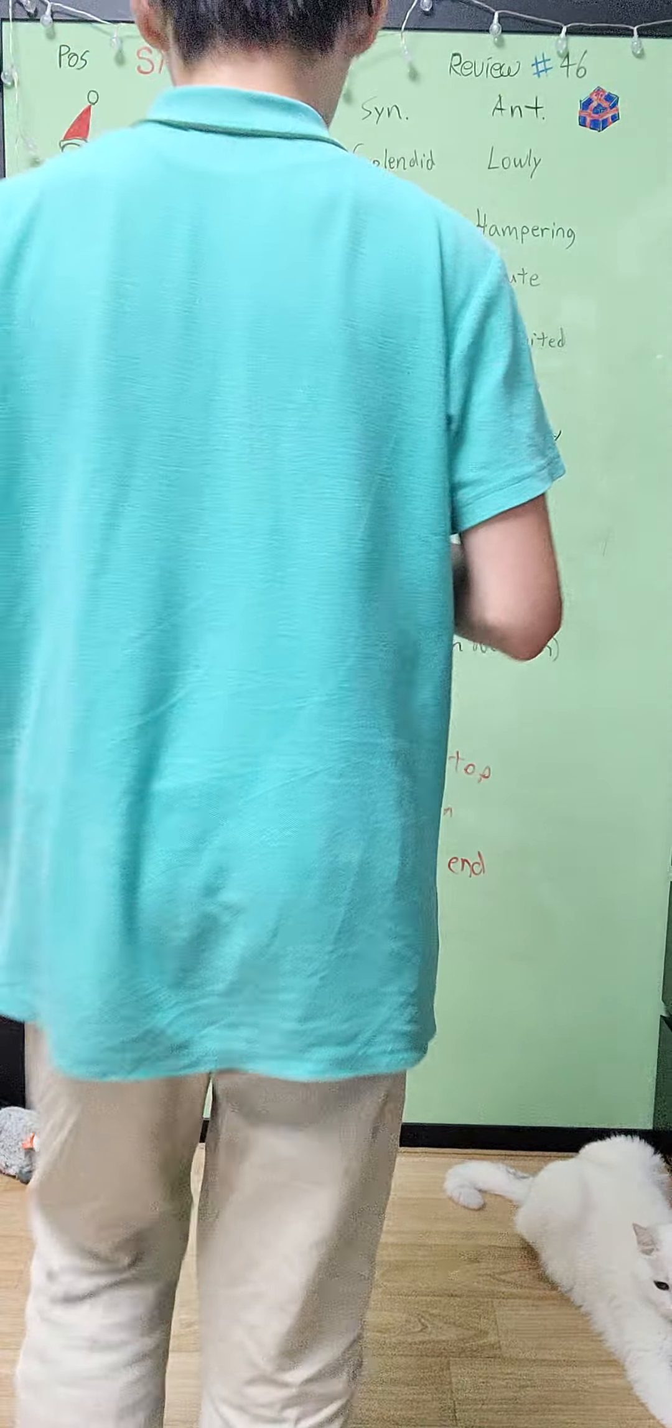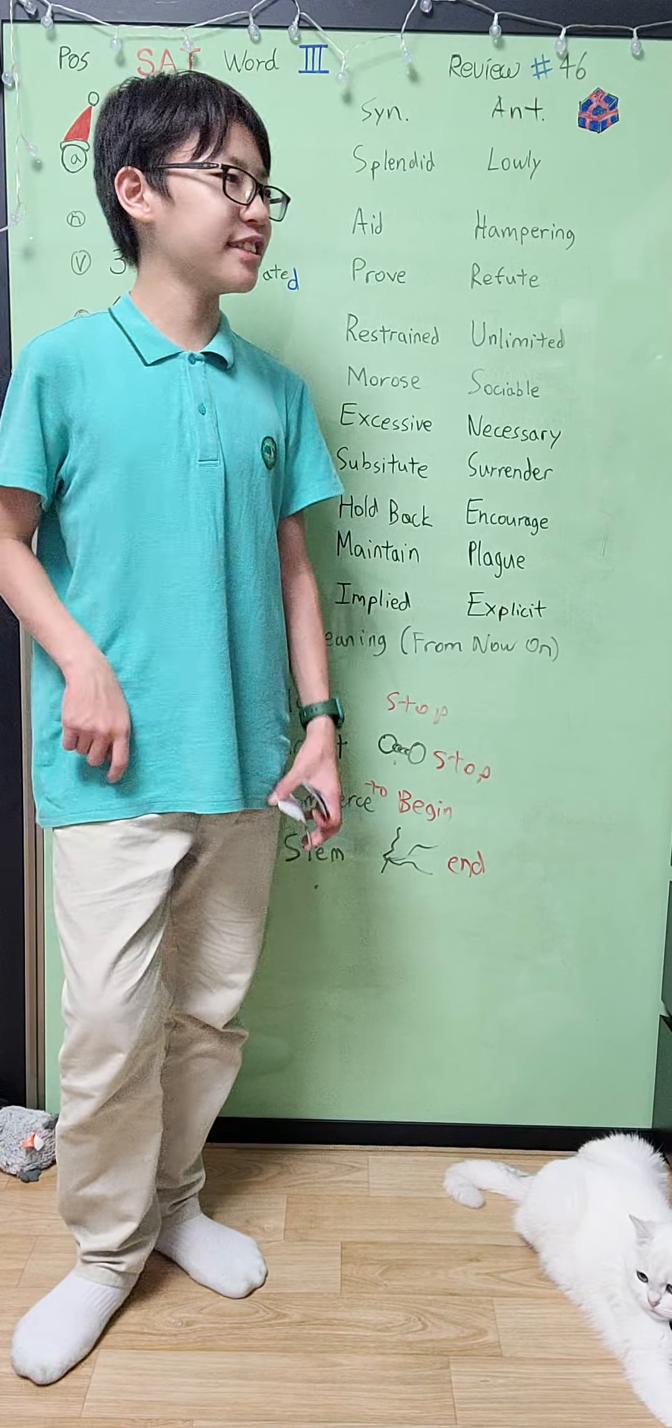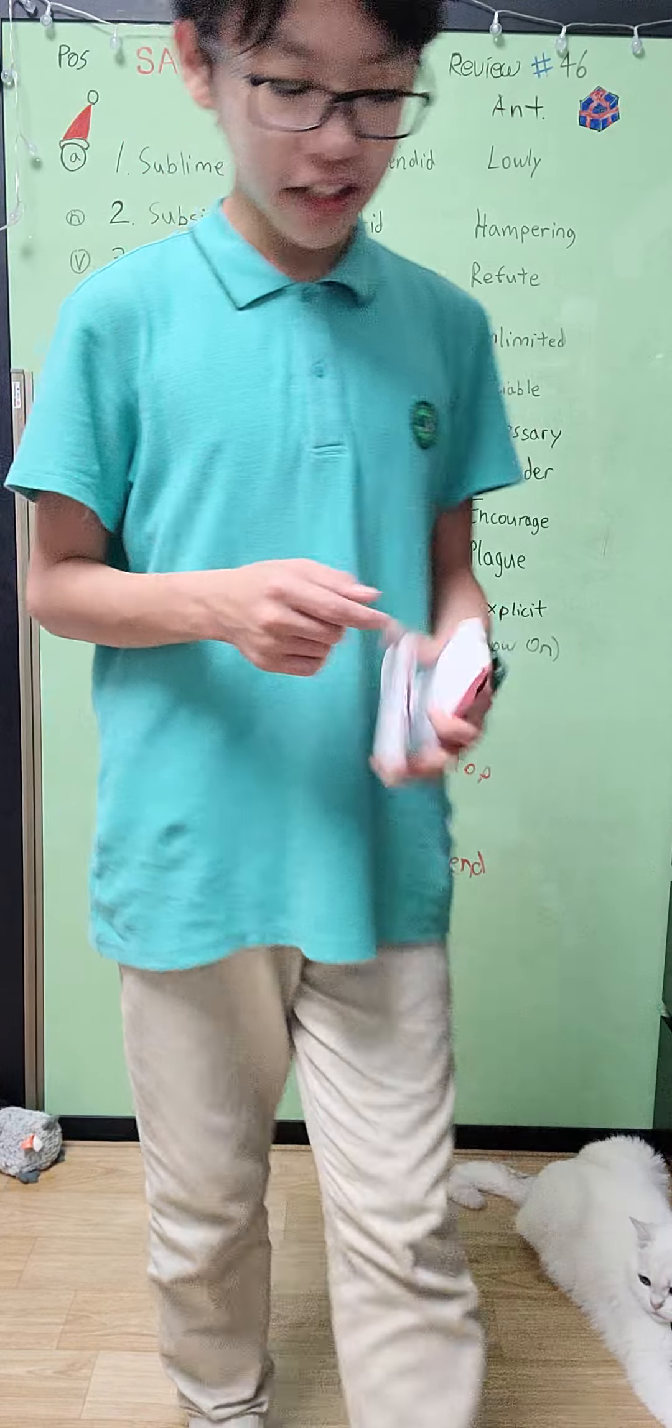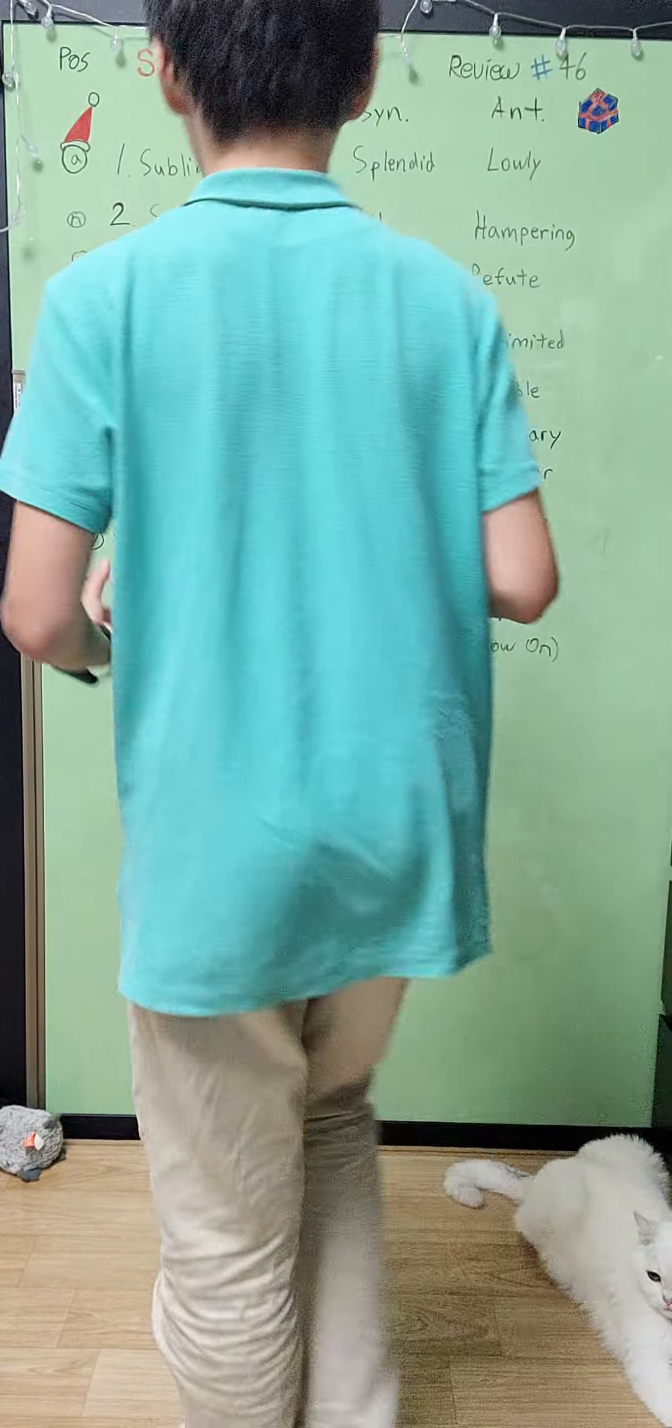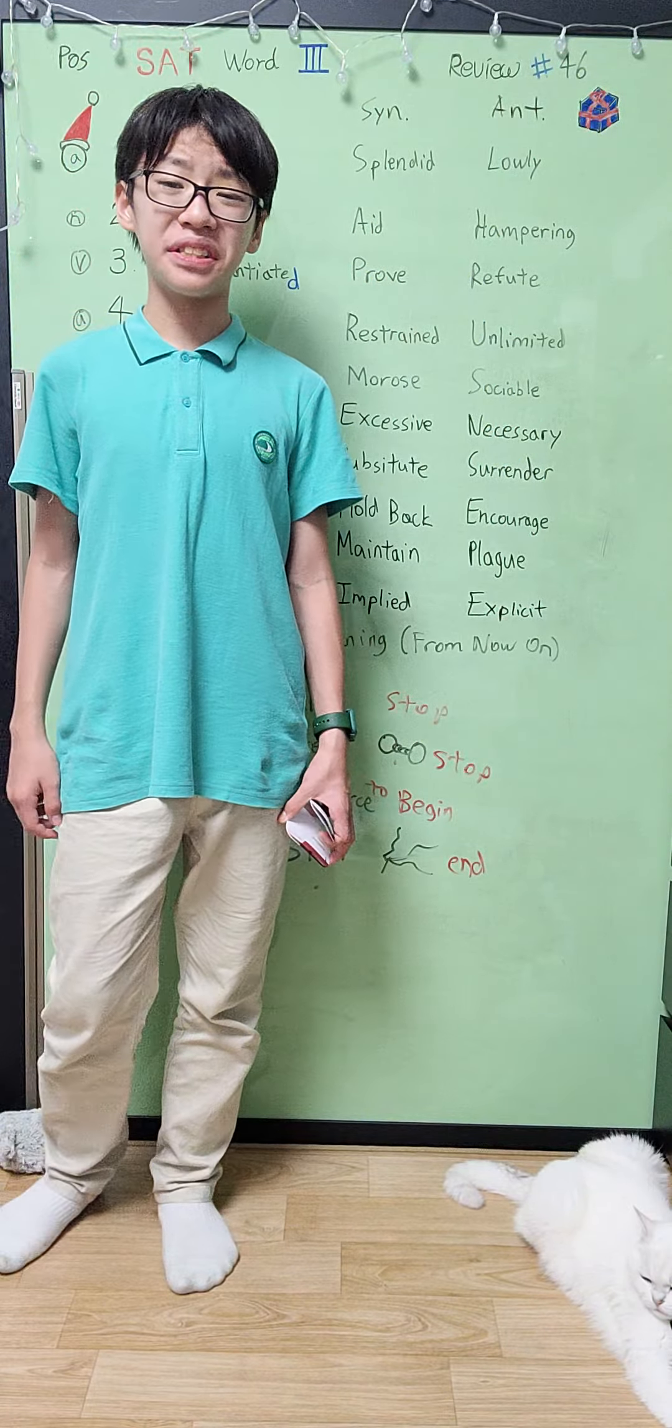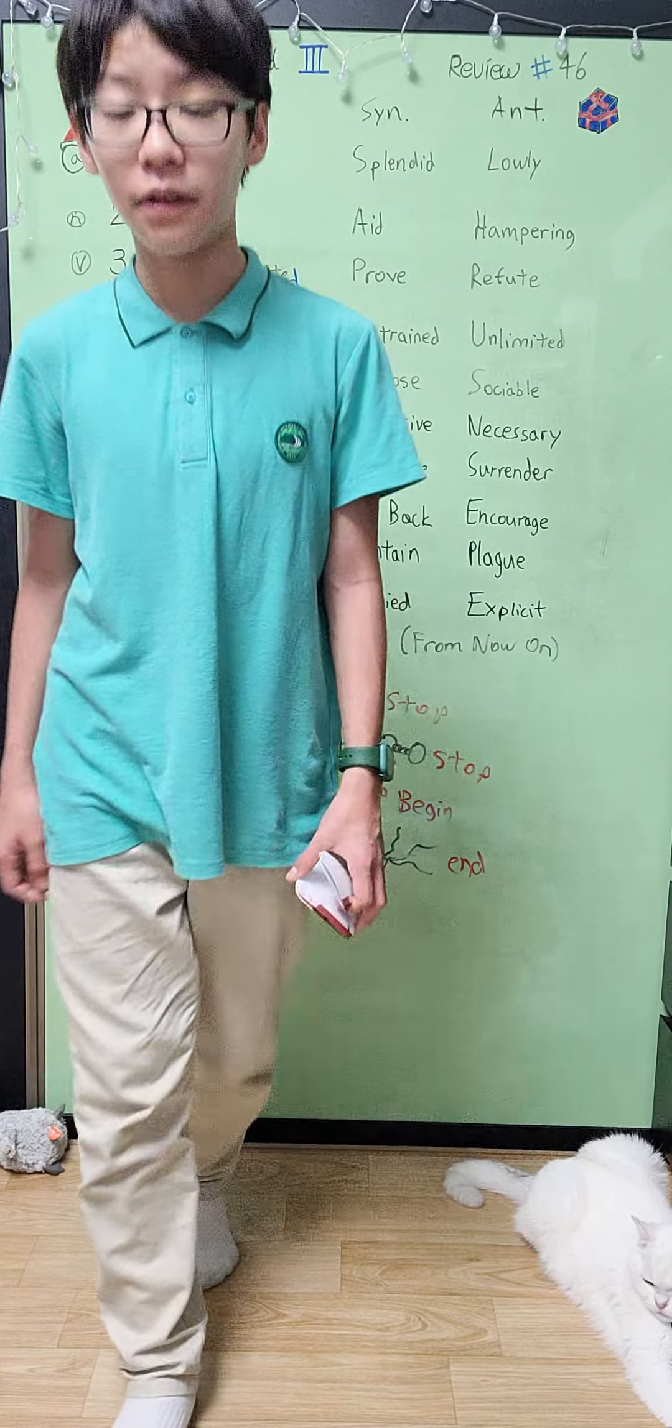Our next word is supplant, which is a verb. Don't supplant me with a cheap AI. AI, come supplant this guy. I said don't. Too late, too late. Our next word is suppress, which is a verb. Why are you suppressing us? Why are you suppressing our writer's speech? Because you guys don't have a writer's speech.